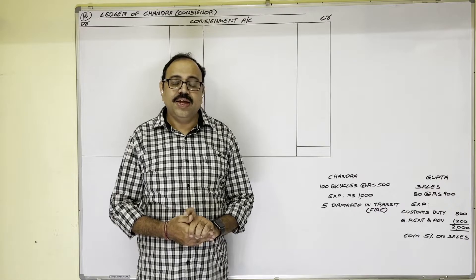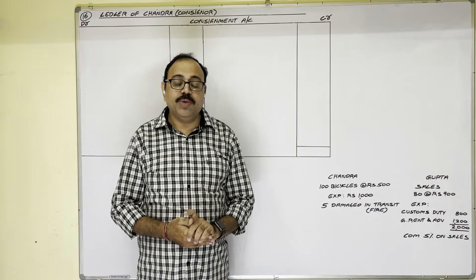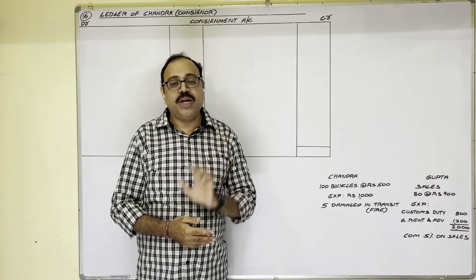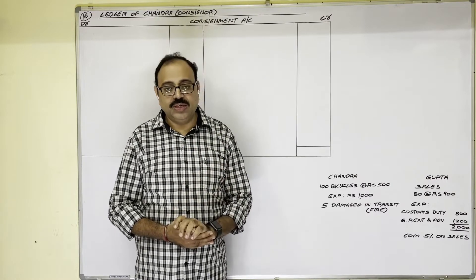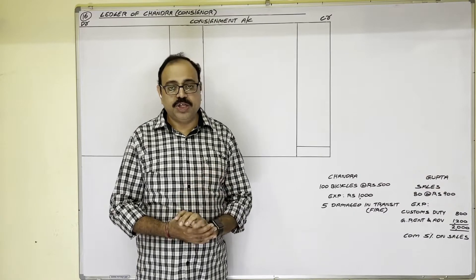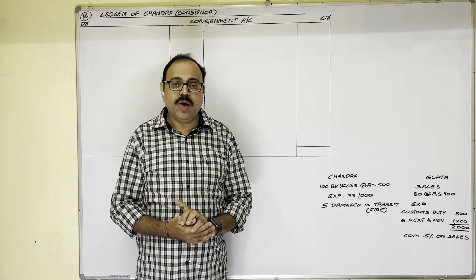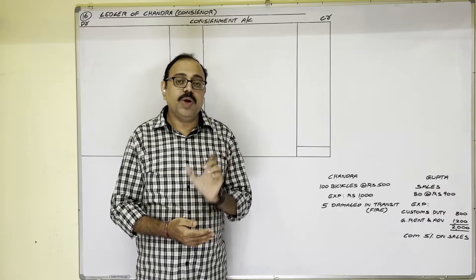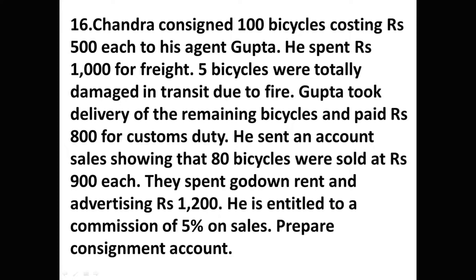Hello students. In this video I am going to explain problem 16 from the consignment topic. I am making this video for degree students — previous video links are available in the description box. In this problem I am going to explain about abnormal loss. Let us see the question first.